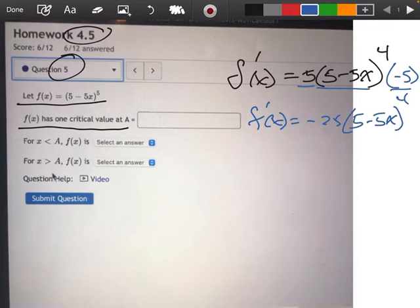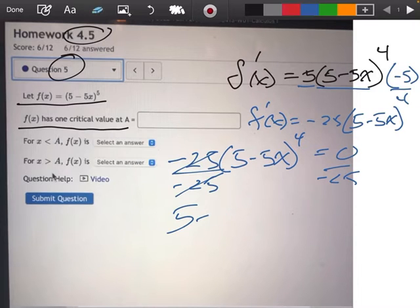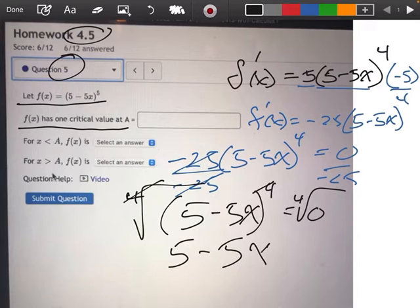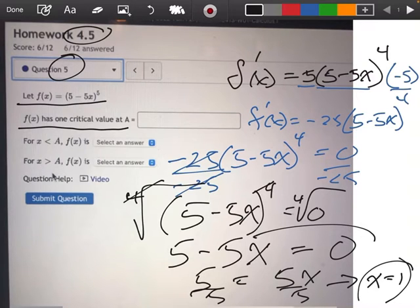To find our critical value, we're going to take that derivative and set it equal to 0. We can divide by negative 25 on both sides. So I have (5 minus 5x) to the 4th equals 0. We can take the 4th root on both sides. So we have 5 minus 5x equals 0. When I move my 5x over, I get 5 equals 5x. Dividing everything by 5, we come up with x equals 1. So we got our critical value at 1.